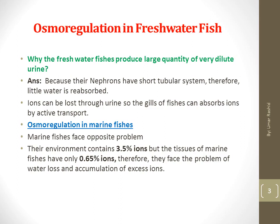Special salt-absorbing cells located in the gill epithelium actively move salt ions — principally sodium and chloride — from the water to the blood. This absorption, together with salt present in the fish's food, replaces diffusive salt loss. These mechanisms are so efficient that a freshwater fish spends only a small part of its total energy maintaining itself in osmotic balance. The gills can absorb ions by active transport, and freshwater fishes also get some salts through their food.